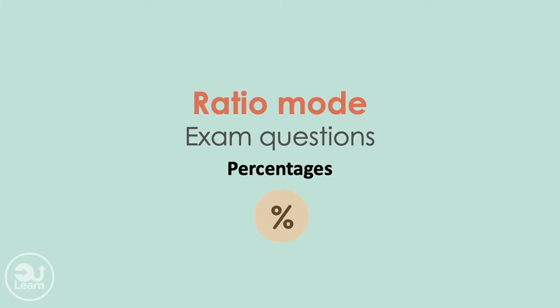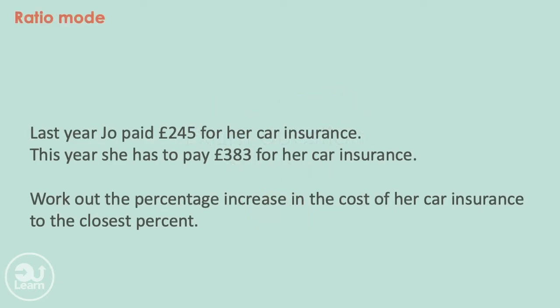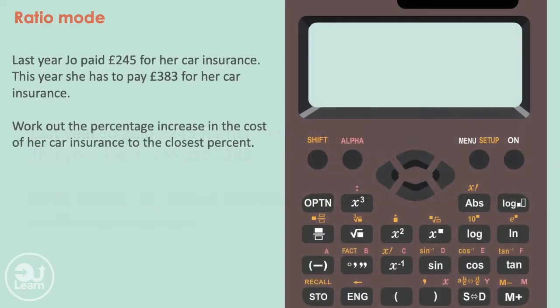Now we're moving on to percentages. Most percentage questions can be solved with this mode. Let's have a look at this question. Last year, Jo paid £245 for her car insurance. This year, she has to pay £383 for her car insurance. Work out the percentage increase in the cost of her car insurance to the closest percent. Like I always have to put numbers into ratios. Let's start by understanding ourselves. So £245 can be represented by 100%, as that's our starting amount. So our first ratio is £245 to 100%.